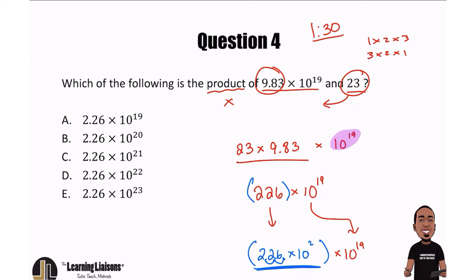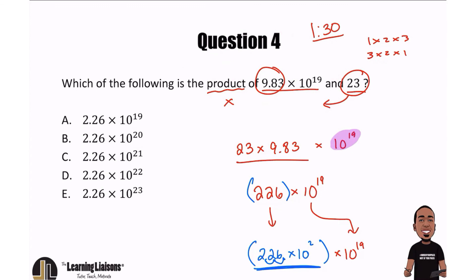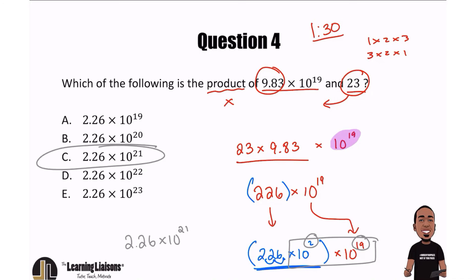The last step is to realize we have two powers of 10. When multiplying powers with the same base — in this case 10 — you add the exponents. So 2 plus 19 gives us 2.26 multiplied by 10 to the power of 21. Our answer is C. I hope this helps everybody!